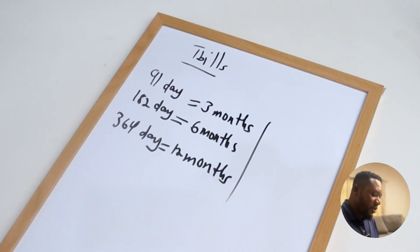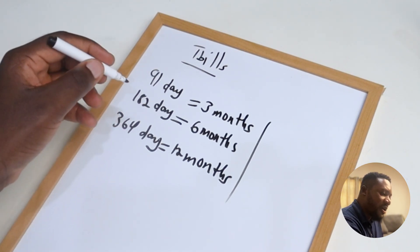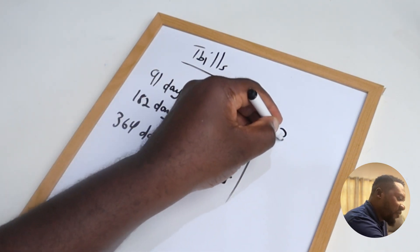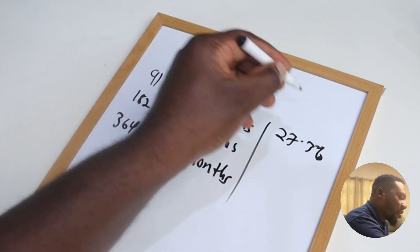So whenever you hear me say BOG, I mean Bank of Ghana. Okay, so on the BOG website, the 91 day bill is currently offering you 27.3 percent.